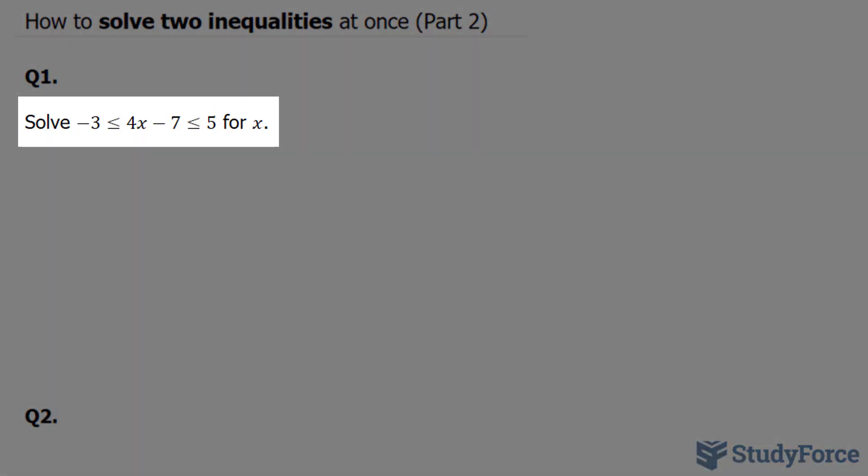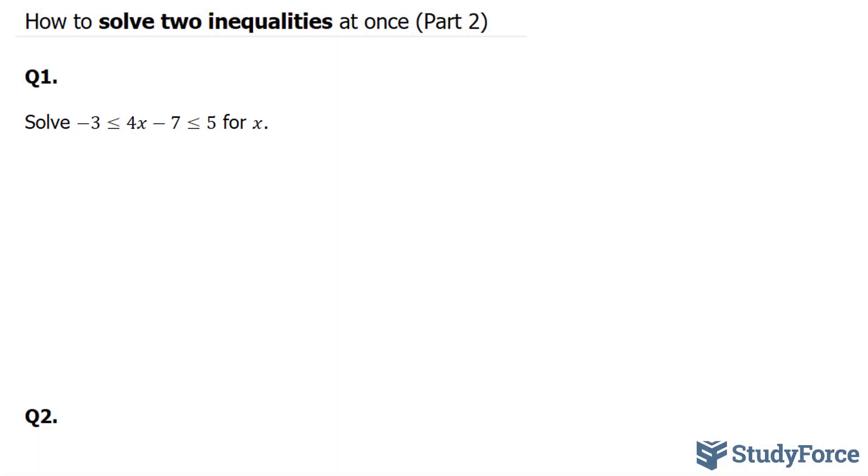Question one asks, solve -3 ≤ 4x - 7 ≤ 5 for x. If you ever went into a situation like this, you have to solve two separate inequalities. You have to solve this part, and you have to solve this part.